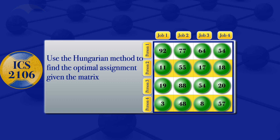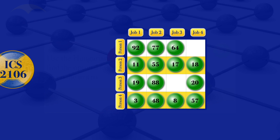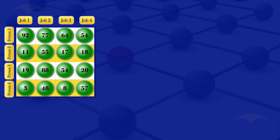In this video, I'm going to use the Hungarian method to find the optimal assignment given the cost matrix appearing on the right. We have a cost matrix with four people and four jobs, and we want to make the assignment that minimizes costs.